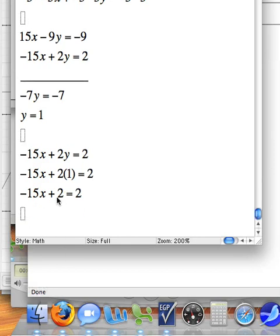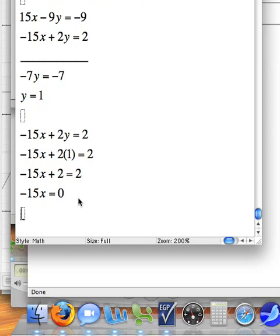And if I subtract 2 on both sides, well, negative 15x isn't going to change. 2 minus 2 is equal to 0. So that just cancels. And 2 minus 2 here is equal to 0. And you know what, no matter what I multiply or divide by when something equals 0, x is going to equal 0 anyway.